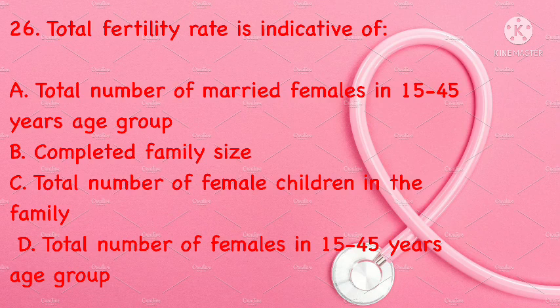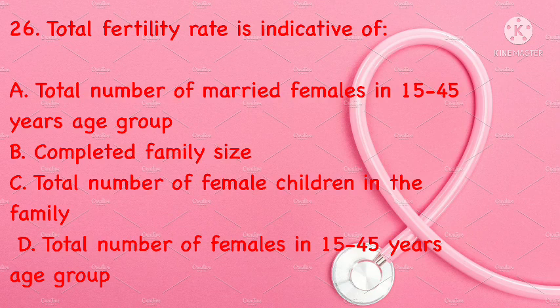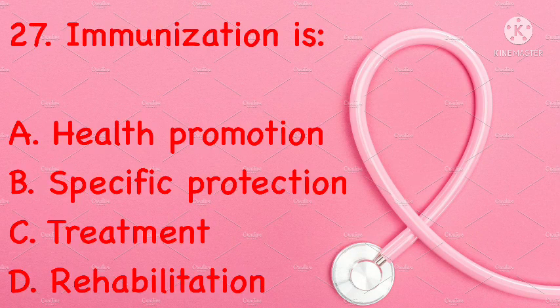Total fertility rate is indicative of: total number of married females in the 15–45 age group, completed family size, total number of female children in the family, or total number of females in the 15–45 age group. Correct answer is D: total number of females in the 15–45 years age group.